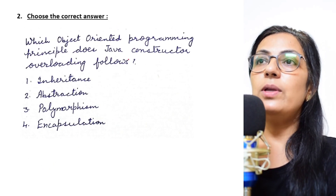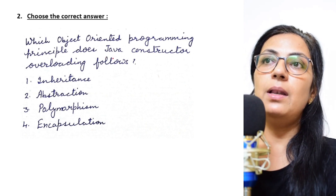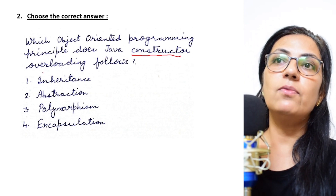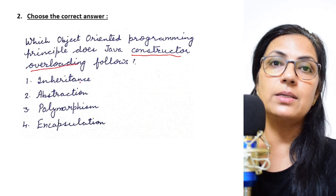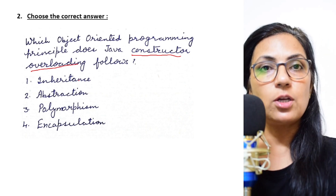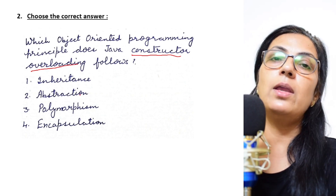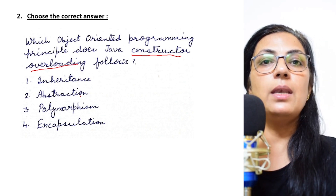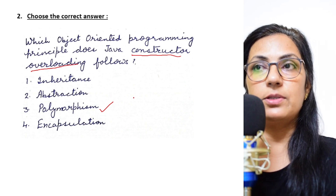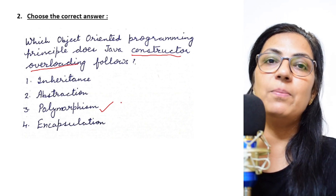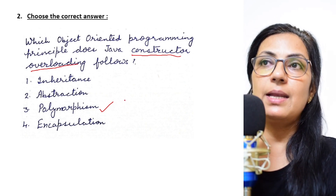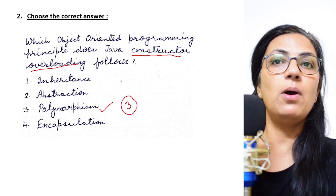Next question: which object-oriented programming principle does Java constructor overloading follow? Constructor overloading means having more than one constructor definition in your program. Whether it is function overloading or constructor overloading, giving the same function name for more than one purpose is achieved by the principle of polymorphism. Polymorphism is when more than one methods or functions have the same name with different purposes. So the answer is option three: polymorphism.